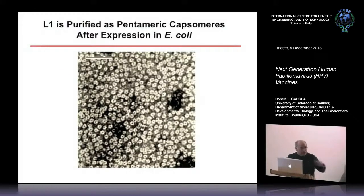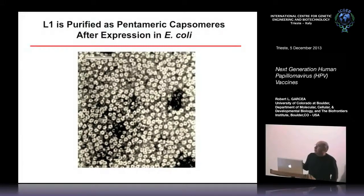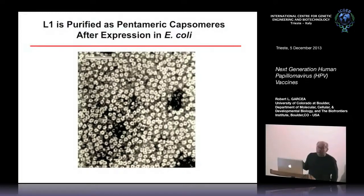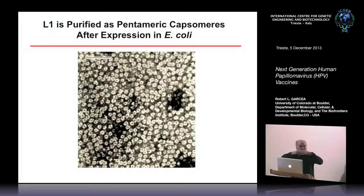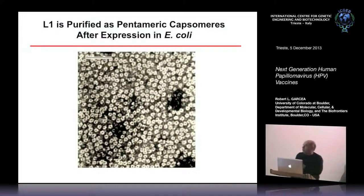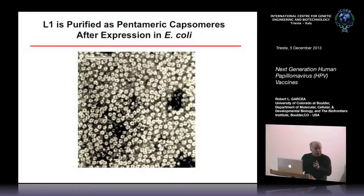Let's talk about what I think should come — developing a capsomere vaccine. Capsomeres are those pentamers that make up the virus-like particle. What's good about pentamers: you can make them in E. coli. When you express L1 protein in bacteria, you don't get assembled particles — you need a nucleus and nuclear import for VLPs — but you can make pentamers in E. coli. The issue is, are pentamers a good vaccine, and can you scale up production economically?